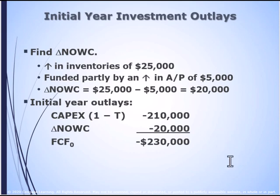Let's think about the change in net operating working capital. Inventories go up by $25,000, funded by accounts payable of $5,000. The change in net operating capital means we're going to have to spend $20,000 — inventories up $25,000 but we're borrowing $5,000, so the net cash outflow is $20,000. We've already discussed the actual investment cost is $210,000. So the free cash flow in year zero is negative $230,000 — the cost of the asset plus the change in net operating working capital.